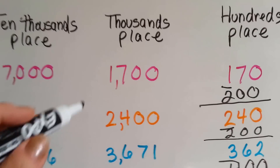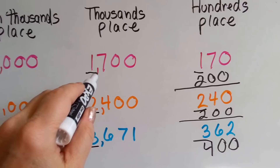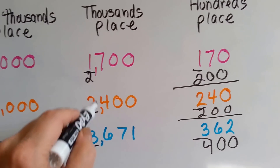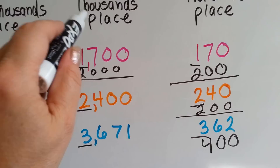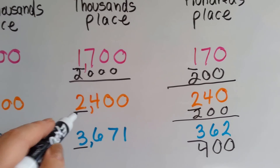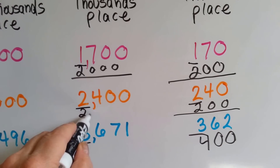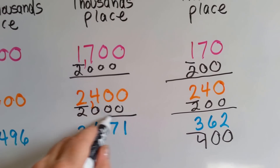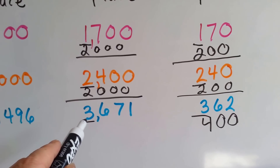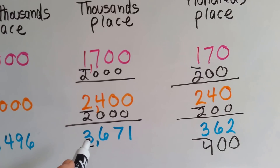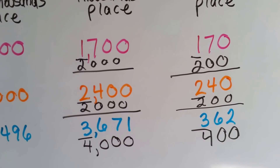Let's try thousands place. Identify the place value we're rounding to. 7 tells the 1 to go up to 2 — it's finished with its job, becomes a 0, and everybody behind it becomes a 0. 1,700 rounds to 2,000. The 4 tells the 2 to stay the same — it's done, becomes a 0, and so does everybody behind it. 2,400 rounds to 2,000. The 6 tells the 3 to go up to 4 — he finishes his job, becomes 0s, and it rounds to 4,000.